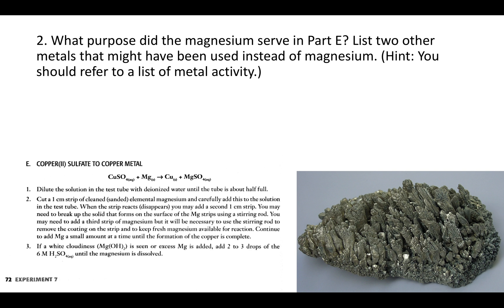Question 2 says: what purpose did the magnesium serve in Part E? It lists two other metals that might have been used instead of magnesium. You should refer to a list of metal activity. In the bottom right I have a picture of magnesium, and in the bottom left I have an excerpt from the procedure that shows Part E.